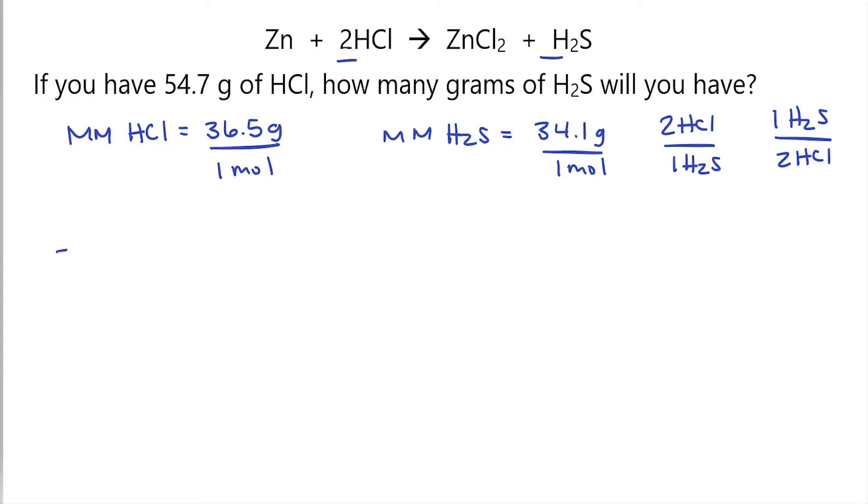So let's begin with things that we know. We know that we have 54.7 grams of HCl. Now, I want to use this fraction, but it's upside down. Because I have grams here, I need to have grams on the bottom here. So I'm going to put 36.5 grams of HCl here, and then one mole of HCl here. This will allow for grams to cancel each other out, which I'll show a little bit later.